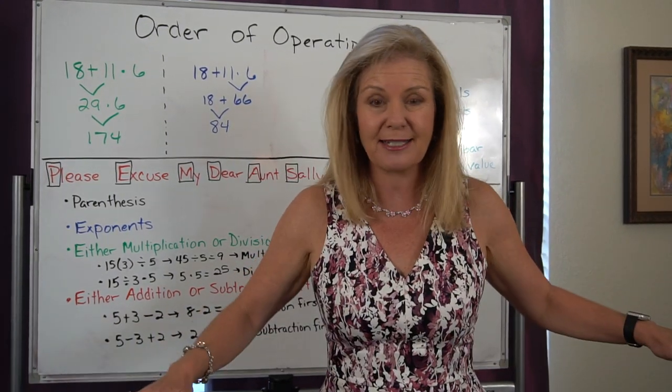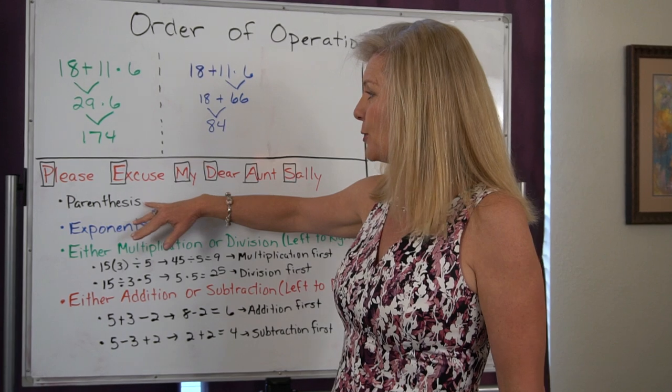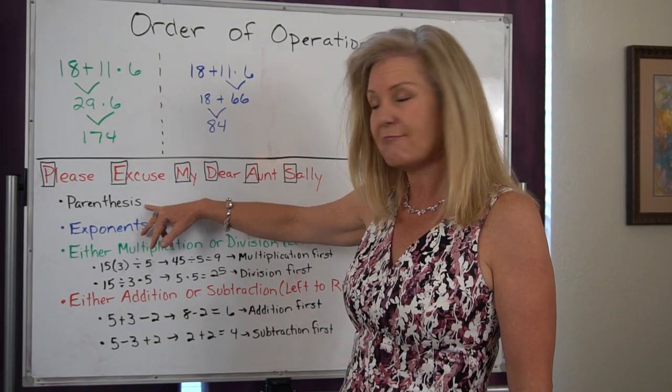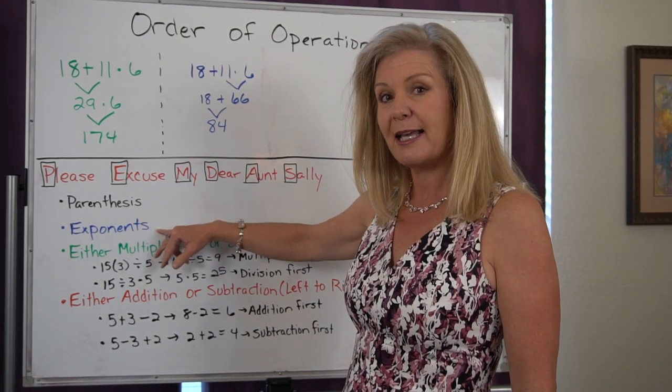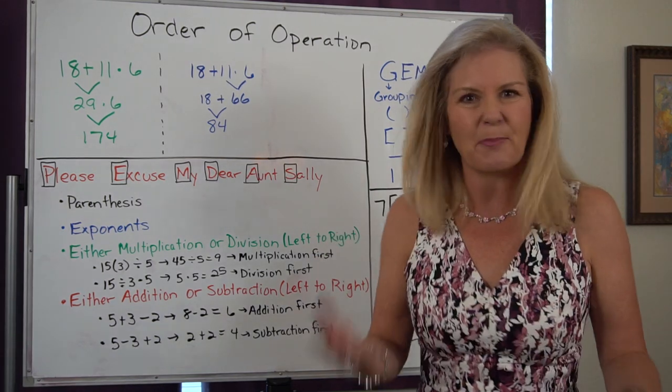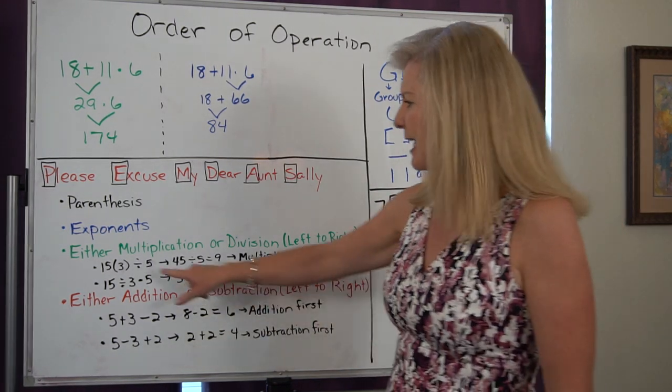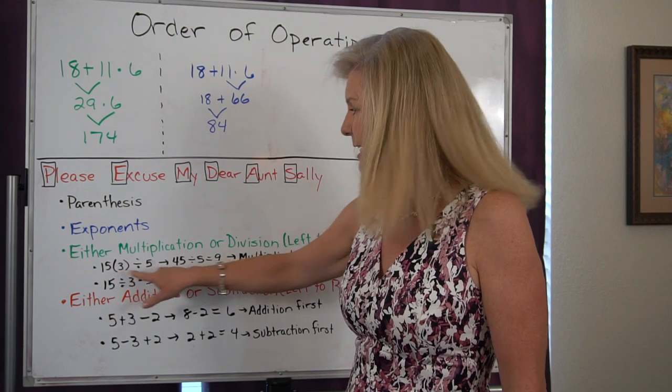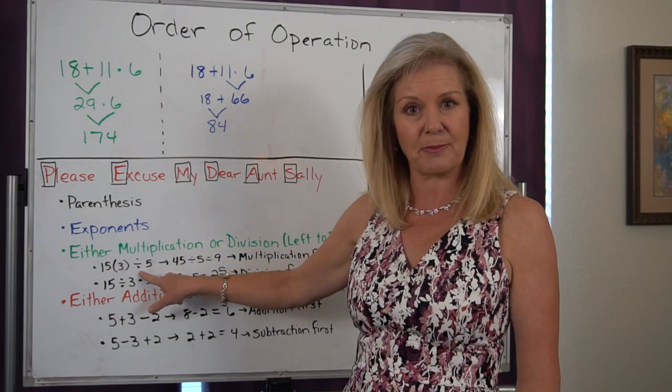And the order that they decided is that they would do parentheses first, then exponents, then multiplication or division. It just depended left to right. If I had multiplication first and division second, I would do multiplication first.